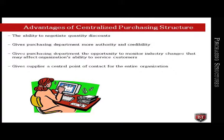There are advantages to having a centralized purchasing structure. One advantage is the ability to negotiate quantity discounts — purchasing for an entire organization instead of just one department gives a purchasing professional, in some instances, a larger volume to purchase. Centralized purchasing also gives a purchasing department more authority and credibility, and the buyer becomes an expert in purchasing items for the organization. A centralized structure also gives a purchasing department the opportunity to monitor industry changes that may affect the organization's ability to service customers, and it gives a supplier a central point of contact within the entire organization.